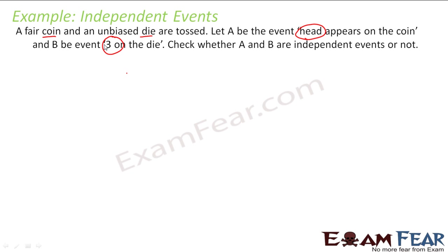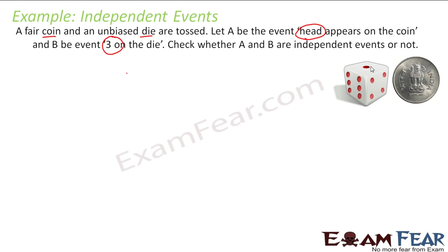So we have a die and a coin tossed together. This is event A and this is event B. Just by looking at the question we can say that they are independent, because whatever you get on the coin is independent of whatever you get on the die. Both are independent of each other.